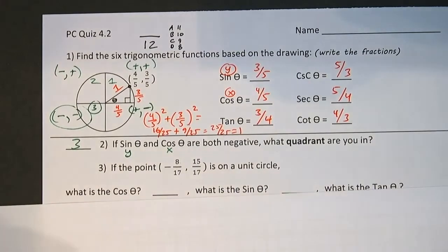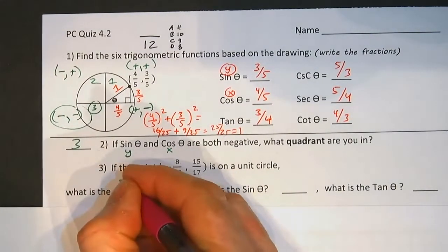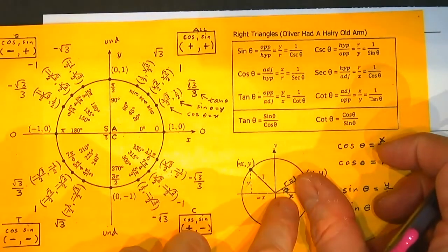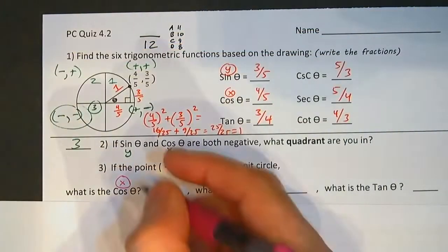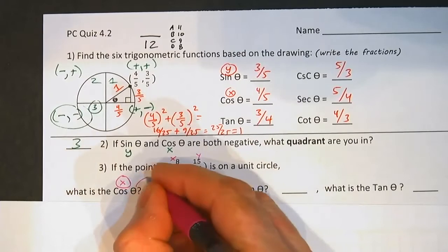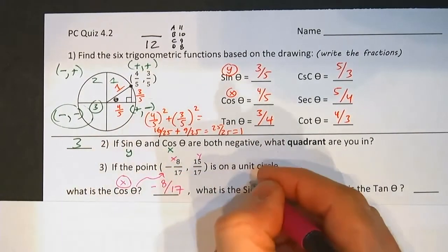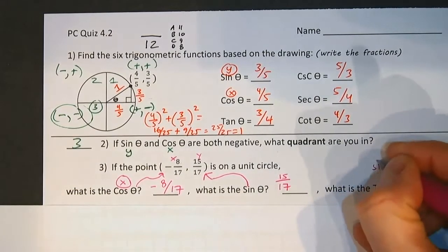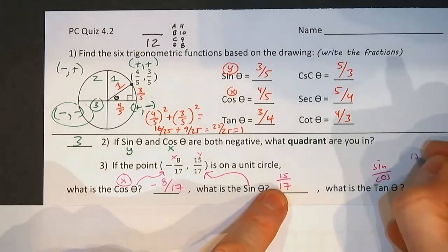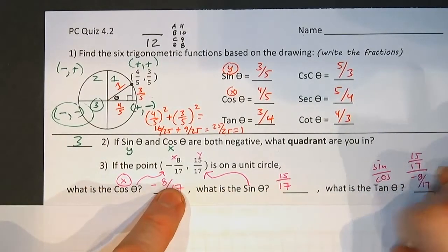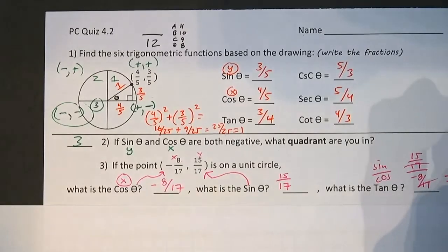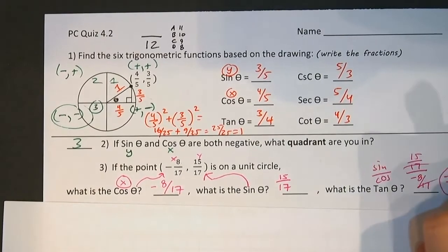If this point's on a unit circle, what is the cosine? Let's see. I remember, cosine is just x. Because I can use this little guy. Cosine is always the adjacent, which is x. So this is x, this is y. So this is the cosine. There's nothing to solve. The sine is the y, 15 over 17. The tangent, once again, we put sine over cosine. So we're going to put 15 17ths over negative 8 over 17. 17ths cancel. Negative 15 over 8. Let's circle that guy.